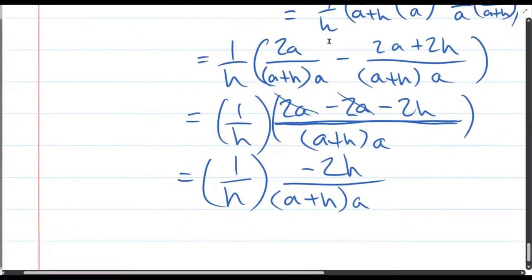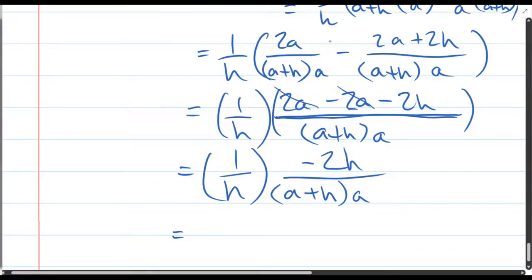All right, what to do here? Well, I could multiply the two numerators together. One times negative two h is just negative two h. Denominator is h times a plus h times a.